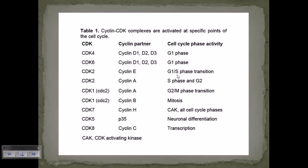CDK2 also partners with Cyclin A, which spans the S phase and the start of the G2 phase — covering the whole S phase and the S/G2 transition. The S/G2 transition is also controlled by another CDK: in fission yeast this is called CDK2, while in budding yeast it is CDC28 (CDK28/CDK25 in many references).